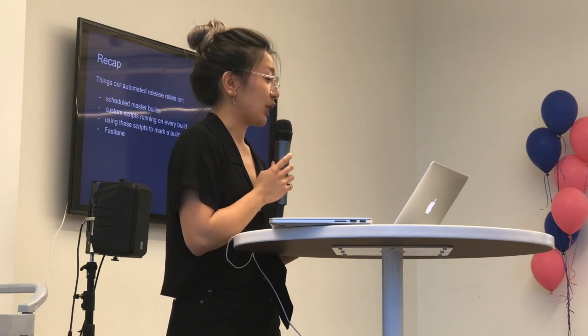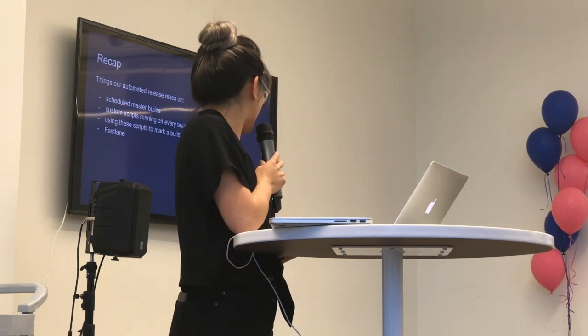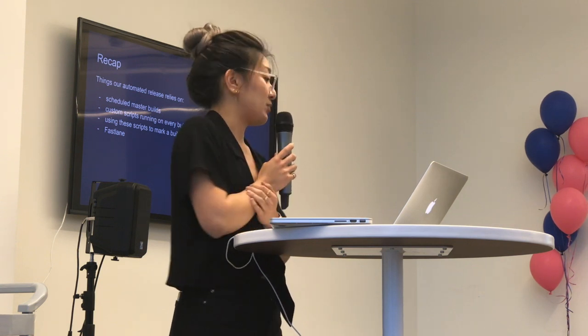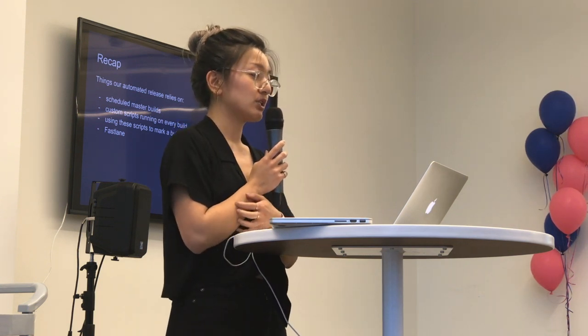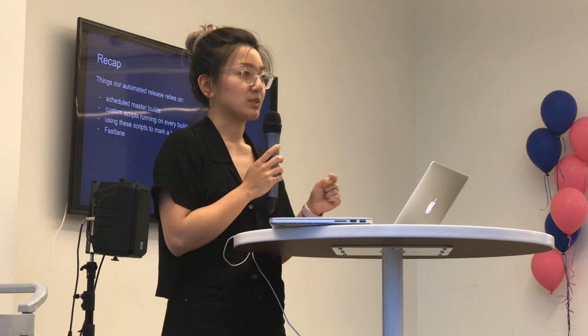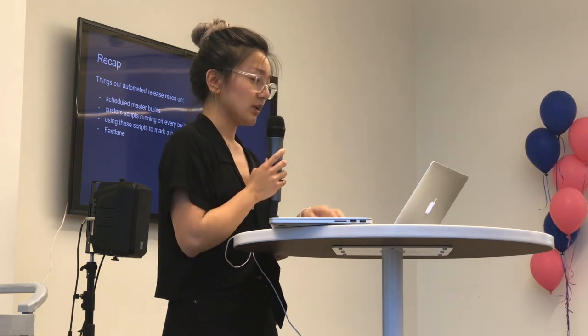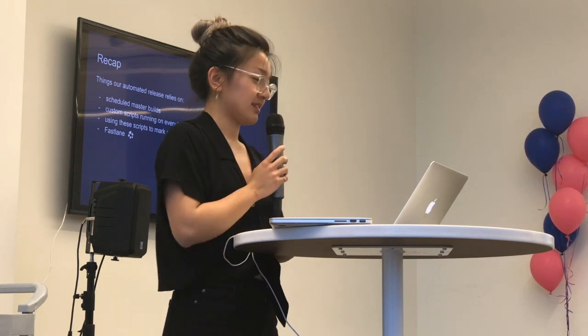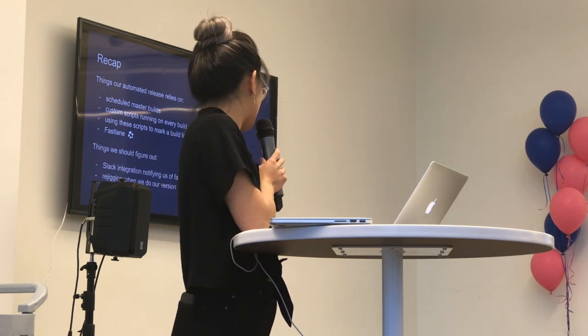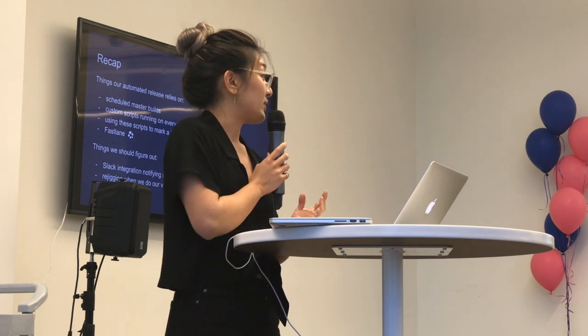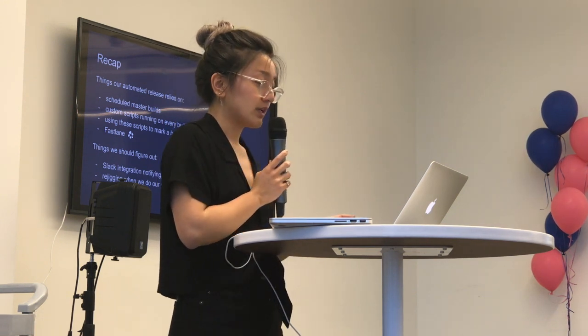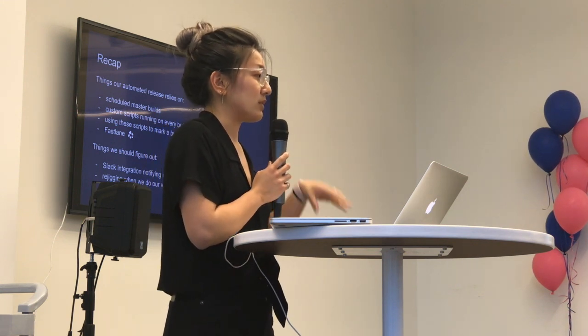To recap this three-minute talk: things our automated releases rely on are scheduled nightly builds for our master branch, pre and post-build scripts that run on every job, and using those scripts to mark relevant builds for release. Things we should work on are a Slack integration to notify us of failures when a build or upload fails, as well as rejigging when we do our version bumps to avoid the cascading failed upload issue.